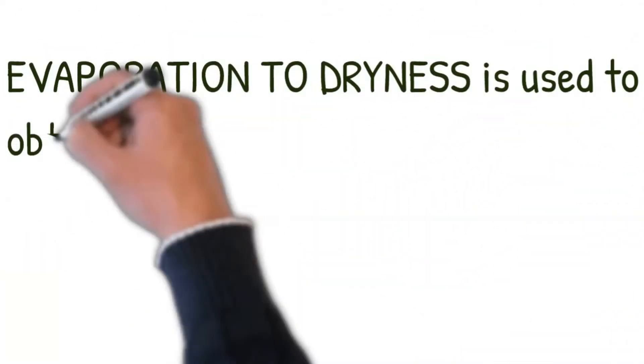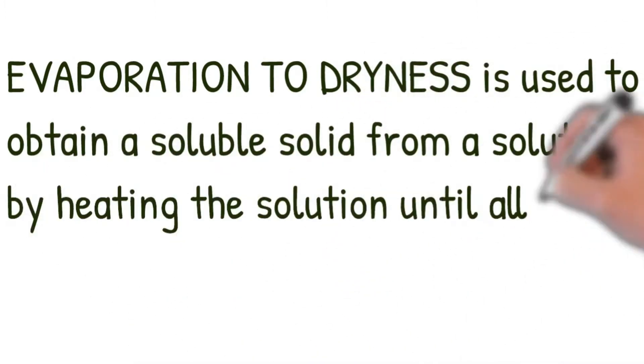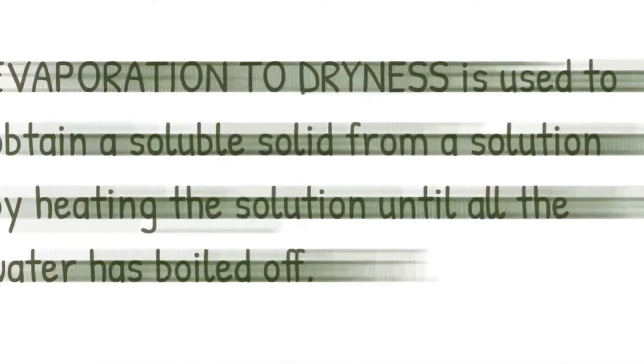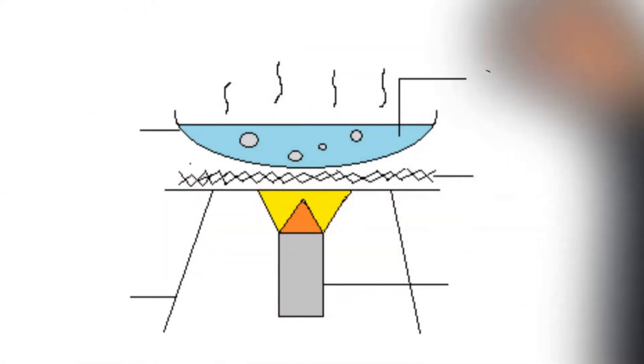Evaporation to dryness is used to obtain a soluble solid from a solution by heating the solution until all the water has boiled off. Diagram showing the evaporation to dryness of a salt solution.